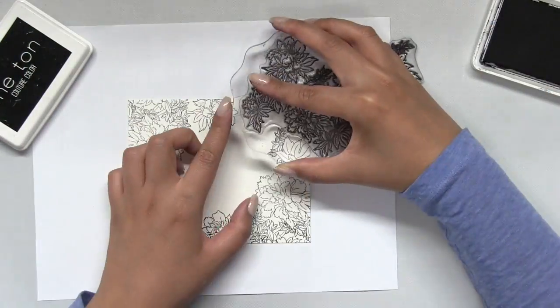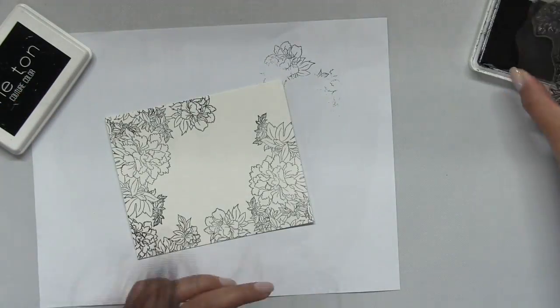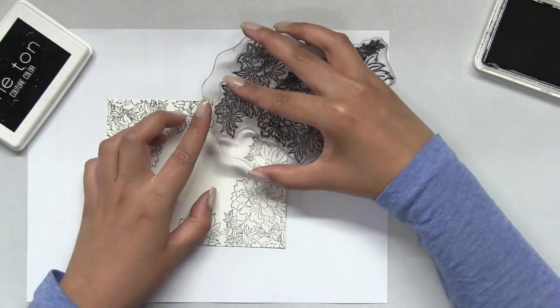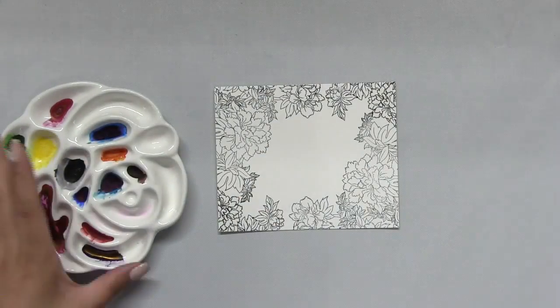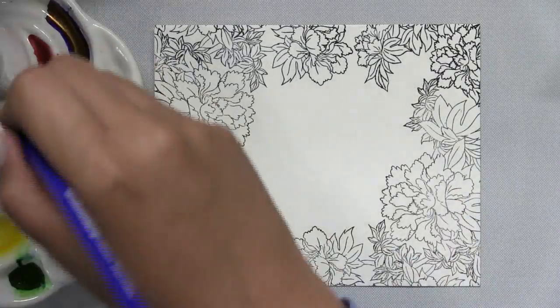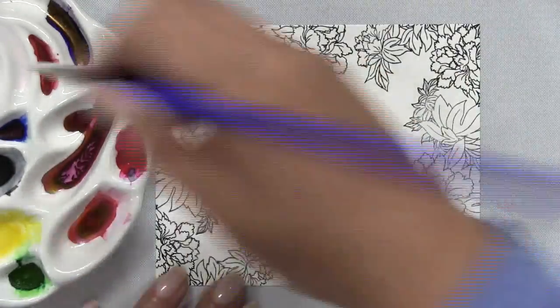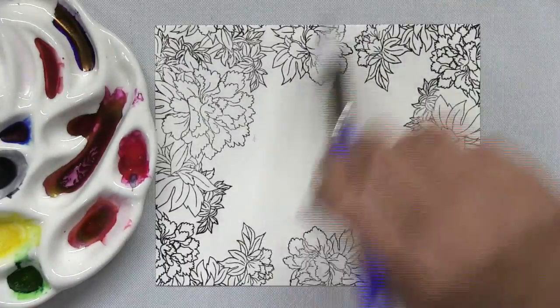So I use my MISTI to help stamp the two corners and then I'm just going to put the stamp on an acrylic block and stamp the rest of the open or empty areas.